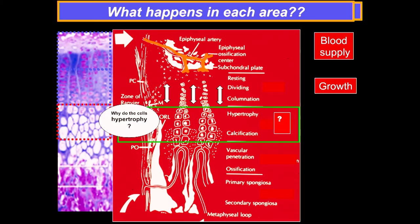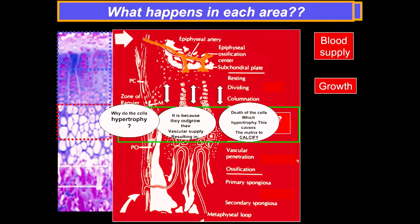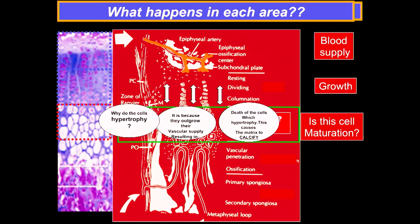Is this really cell maturation? In bone production, is the cartilage converted to bone or replaced by bone? It's replaced—it's a replacement process. The cartilage cells expand their matrix, and once they outgrow their blood supply, they die and are replaced by bone. It's actually cartilage cell death that occurs right here.